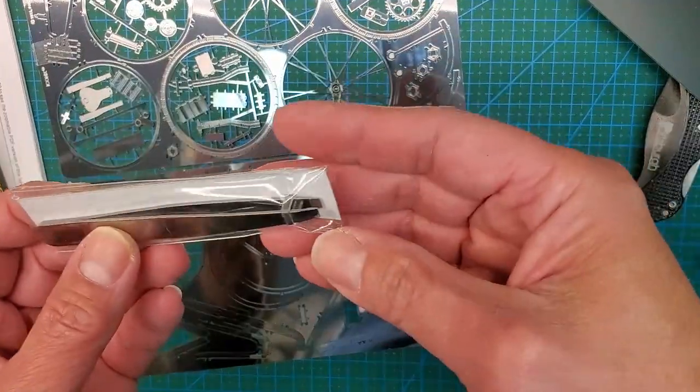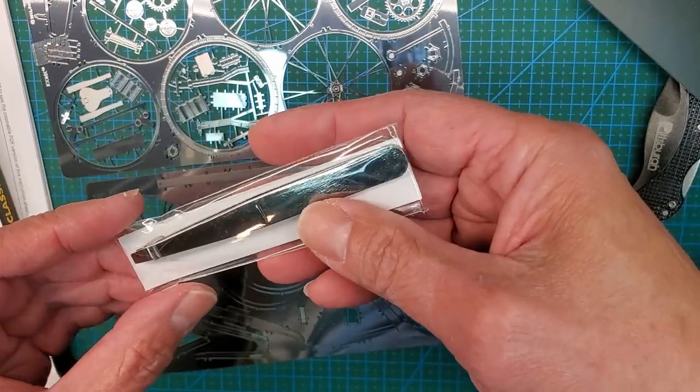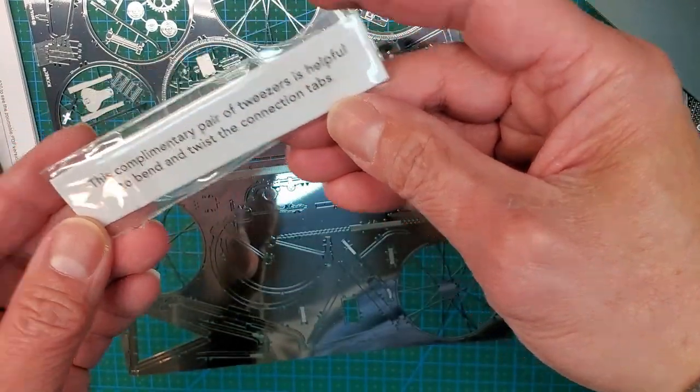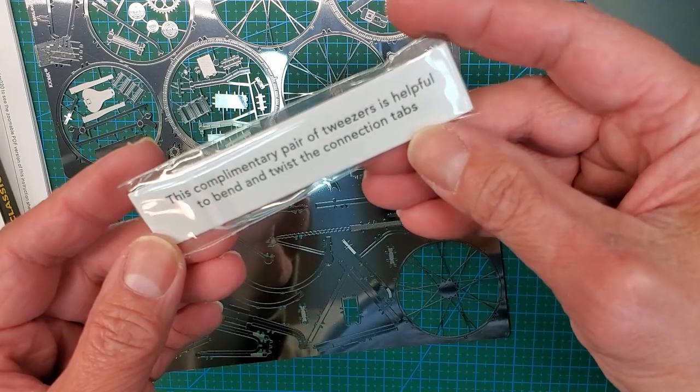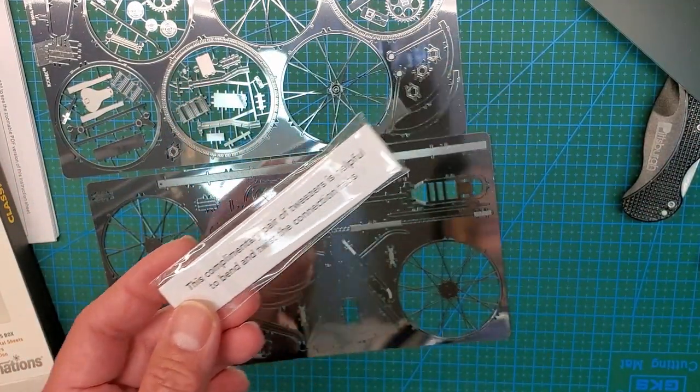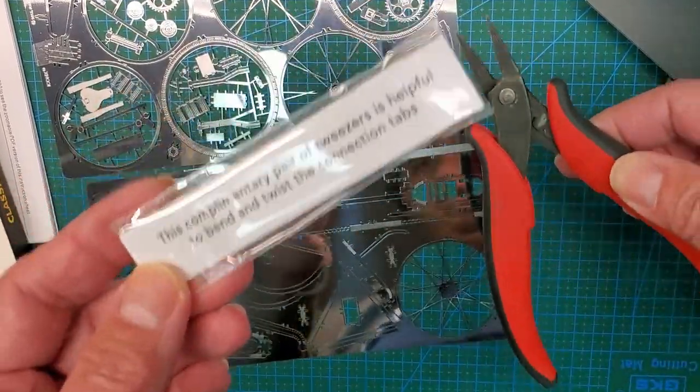But oh it comes with tools. The previous one that I got did not come with tools. But this one comes with some sort of tools. Complementary pair of tweezers. Helpful to bend. Oh nice. Yeah I used to use these before in the previous one because I didn't get one. So we'll try this.